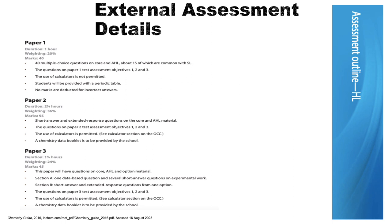The use of a calculator is permitted in paper 2 and the chemistry data booklet is provided by the school. Paper 3, which is worth 24% of the overall grade, will have questions on core, higher level, and the option. There are two sections in this paper. The first section contains data-based questions and several short answer questions from experimental work. Section B has short answer and extended response questions from the option that we chose to cover. The use of a calculator on this paper is permitted and the chemistry data booklet is provided by the school.